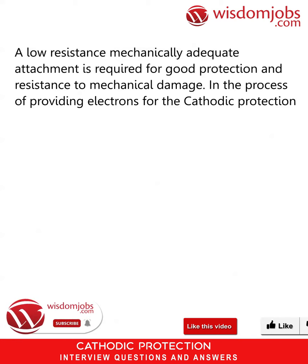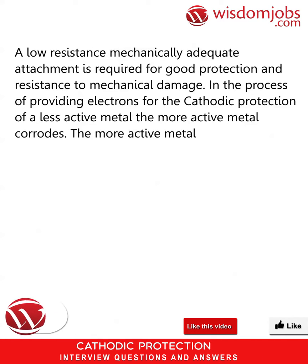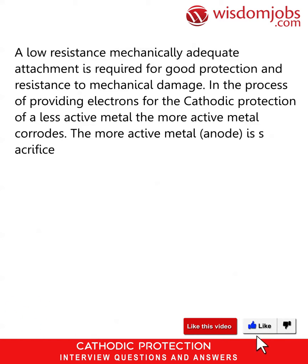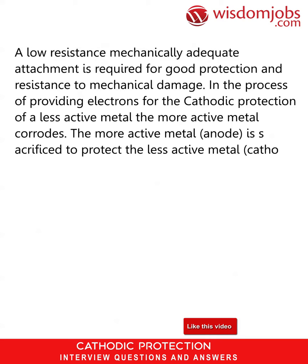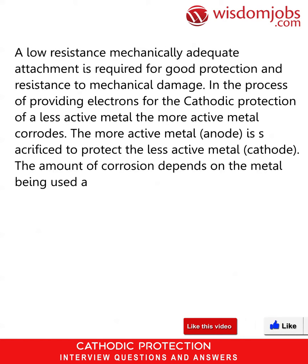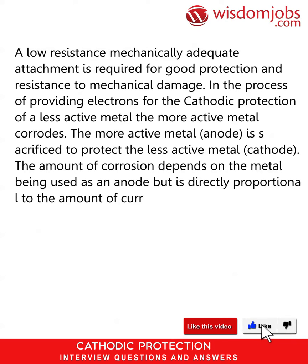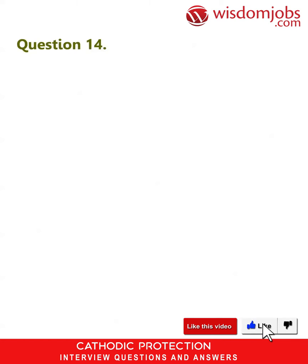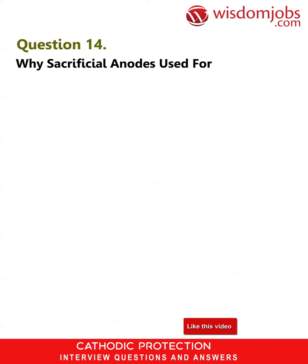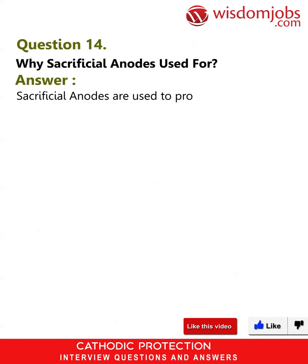In the process of providing electrons for the cathodic protection of a less active metal, the more active metal corrodes. The more active metal anode is sacrificed to protect the less active metal cathode. The amount of corrosion depends on the metal being used as an anode but is directly proportional to the amount of current supplied.